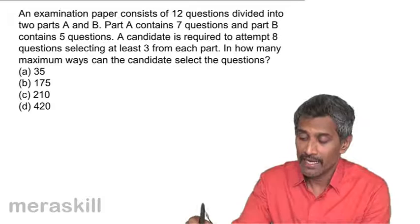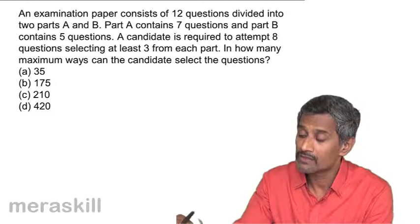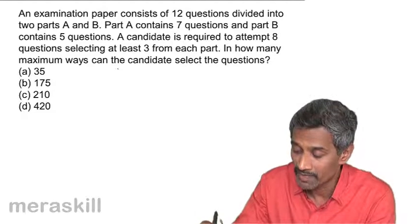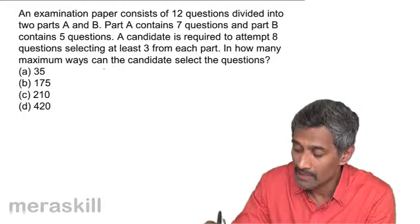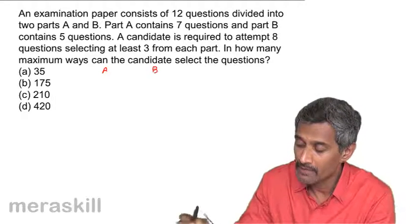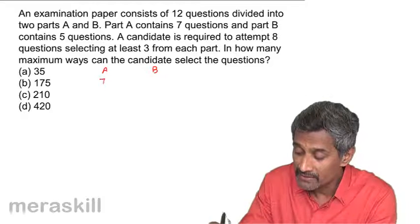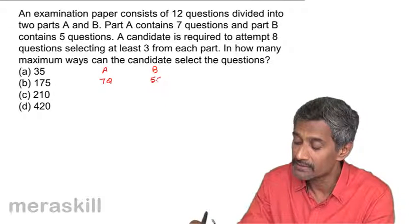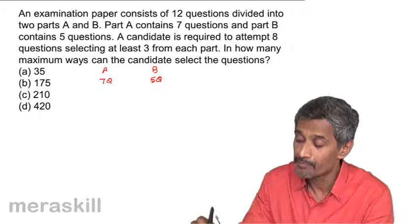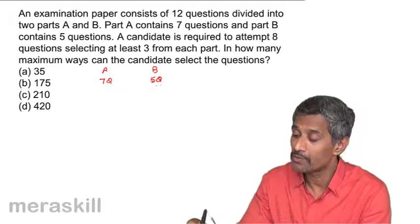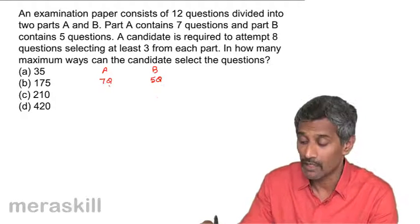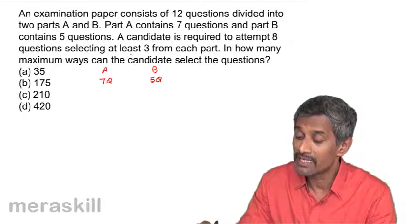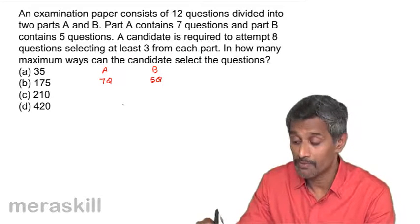Let's see what kind of problems we have here. In the first question, an examination paper consists of 12 questions divided into two parts, A and B. Part A contains seven questions, Part B contains five questions. A candidate is required to attempt eight questions out of the total, selecting at least three from each part.